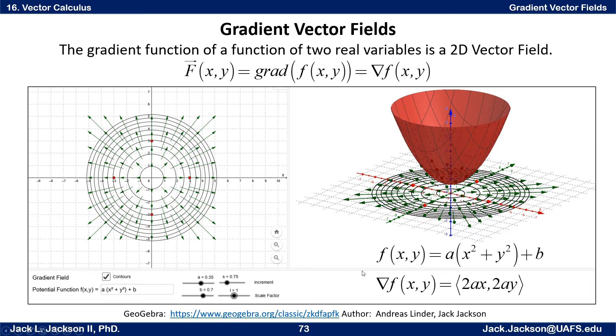Now the gradient of that is just the derivative. So if we distribute this we get ax² + ay² + b. Take the derivative with respect to x. The b and the ay² are treated like constants, so that goes to 0. a is a constant, x is a variable, so that's the power function that gives us 2ax. Similarly we get 2ay for the partial derivative of f with respect to y. And that gives us our gradient function.